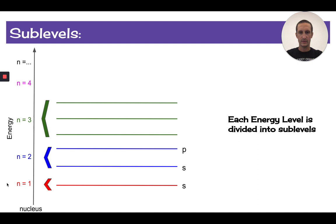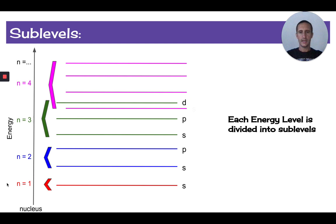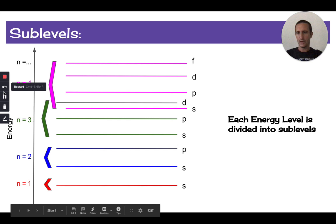The third energy level is subdivided into three sublevels, and we have an S, a P, and a D sublevel in that third energy level. Perhaps you see a pattern emerging here. The fourth energy level has four sublevels, and those four sublevels are the S, P, D, and now we have an F sublevel. Notice also that there's some overlapping that occurs here.